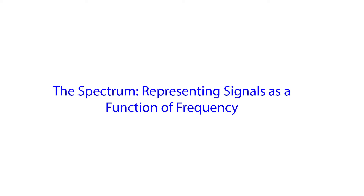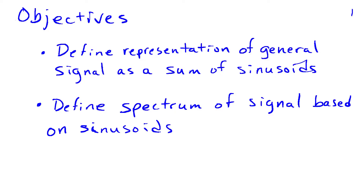In this video, we're going to introduce the spectrum. The spectrum is a way of representing signals as a function of the frequencies that are present in those signals. Our objectives are to define a representation of an arbitrary or general signal in terms of a sum of sinusoids. We're not going to cover how to find the coefficients of that sum — that's material for later. But once we have a signal represented as a sum of sinusoids, we can define the spectrum based on the amplitudes, phases, and frequencies of those sinusoids.